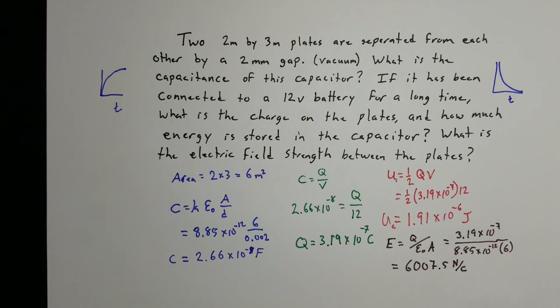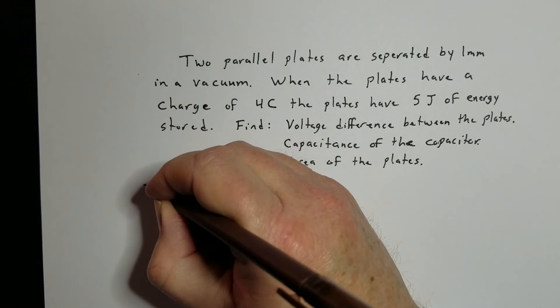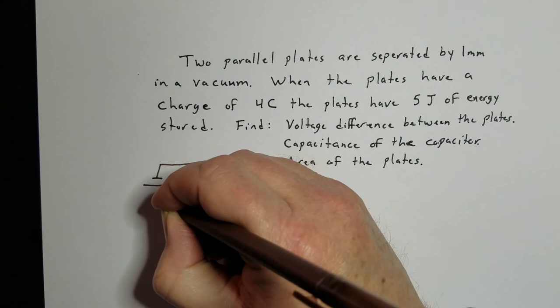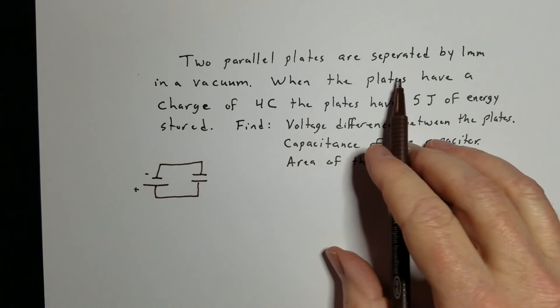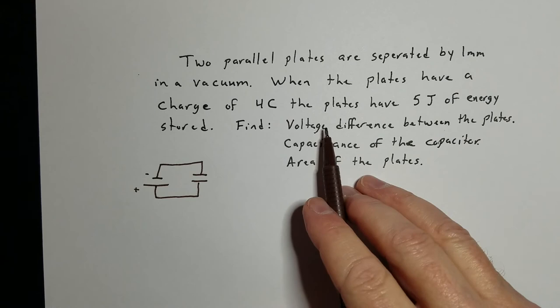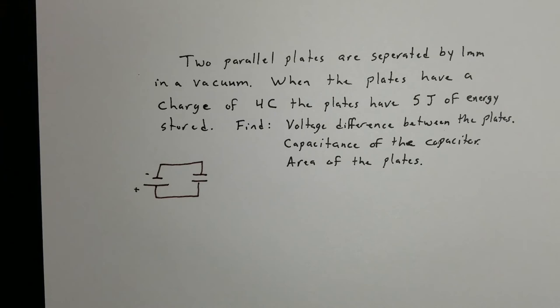Let's do one more problem where we work backwards and find other quantities. We have a parallel plate capacitor connected to a battery in a simple circuit. We're told there's a charge of 4 coulombs when the plates have 5 joules of energy stored, and the plates are separated by 1 millimeter. We want to find the potential difference, the capacitance, and the area of the plates.